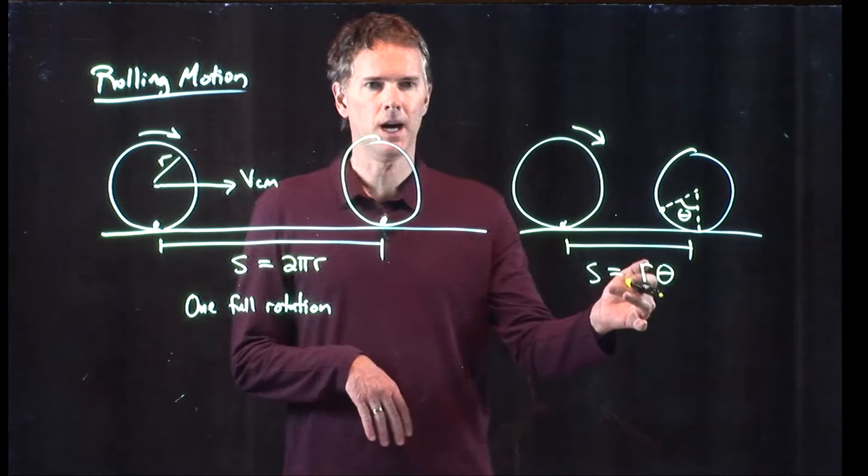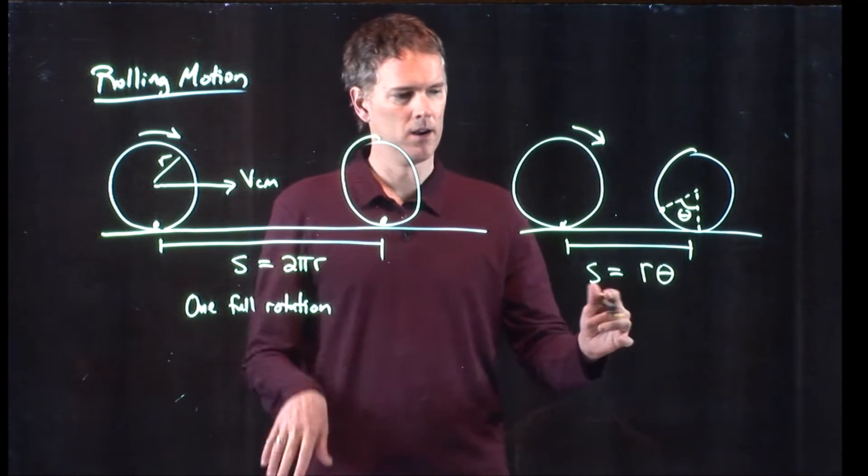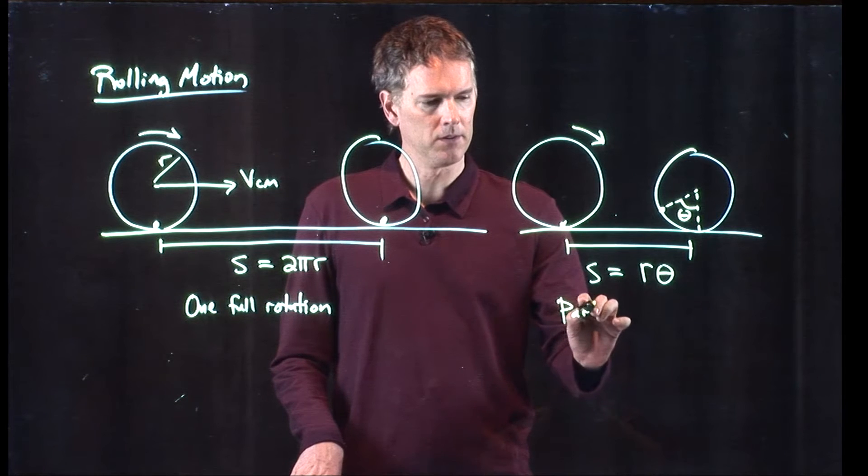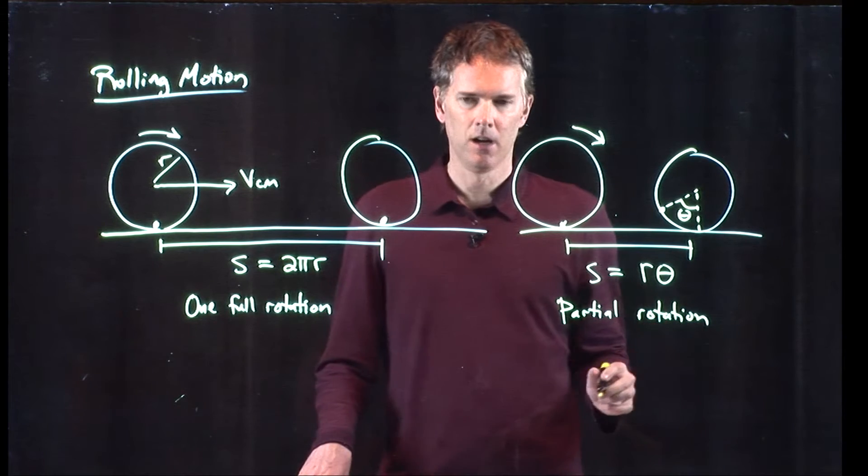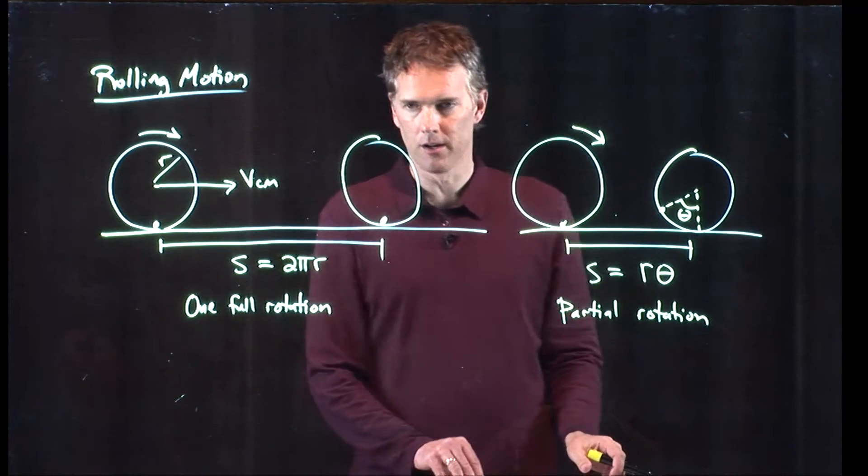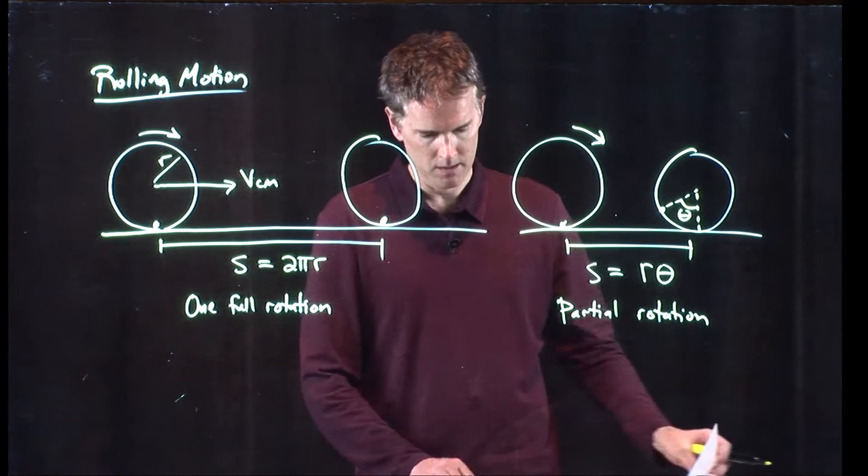It has gone a distance r times theta. A full rotation is 2π, so we would get back to 2πr. If it's a partial rotation, then we just go a distance r times theta, which is also known as the arc length.